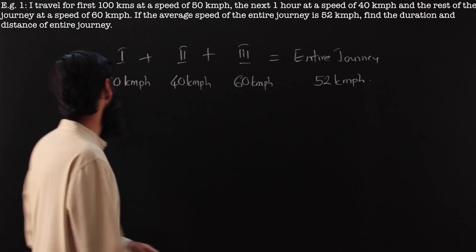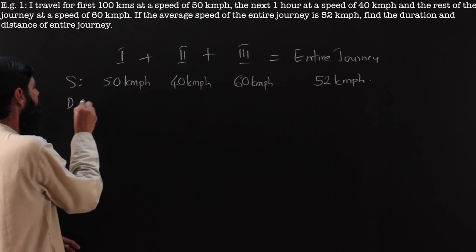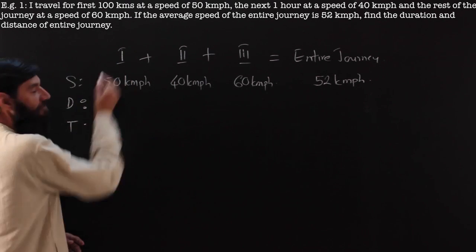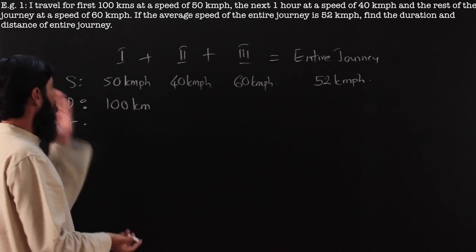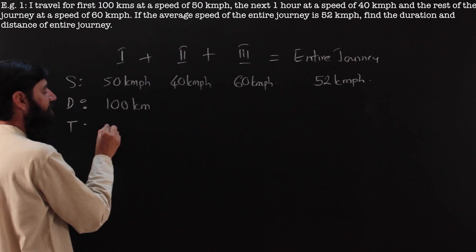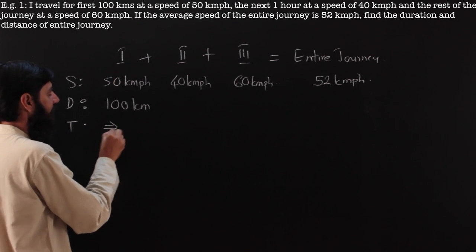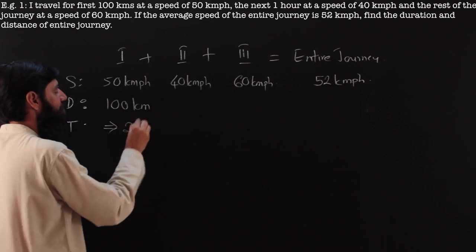What do we know about the individual parts? Speed, distance, time. In the first stretch, the distance is given as 100 km. Knowing speed and distance, we can find the time. The time taken is 2 hours, since time is distance by speed.